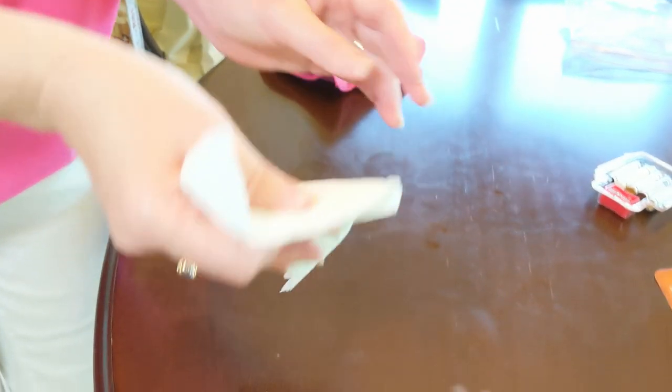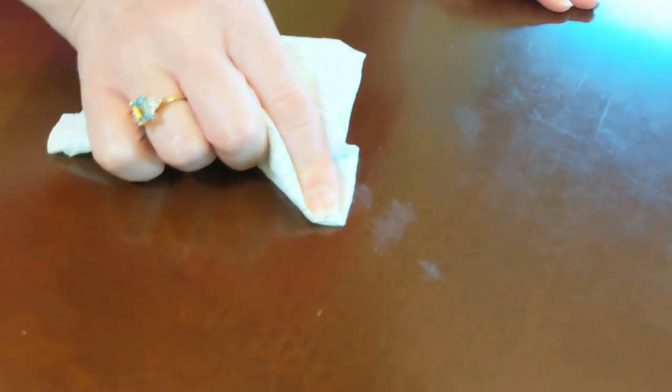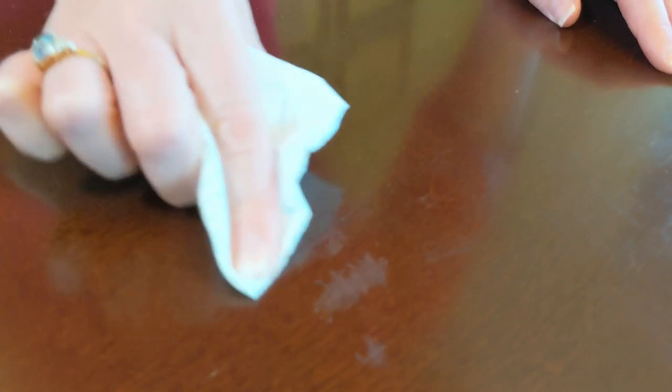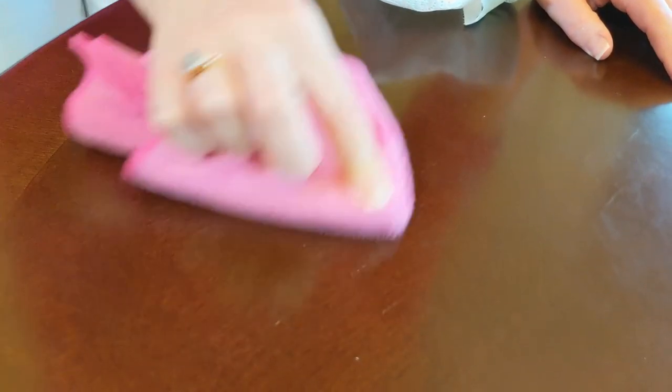Now that it's been about 20 minutes you can just take your paper towel or you can use a rag that you want to throw away. You don't want to use a microfiber cloth on it because you'll get wax on it. But you'll just want to gently rub over where you put the wax. And it'll rub it off from the actual table but not from the scratches. The wax will have set in the scratches.